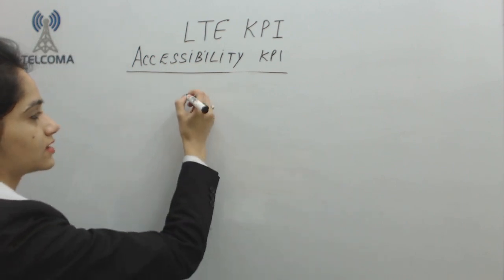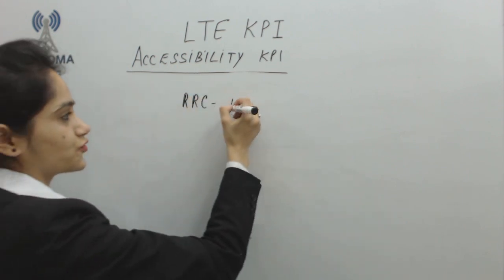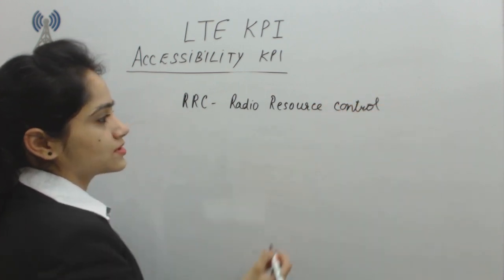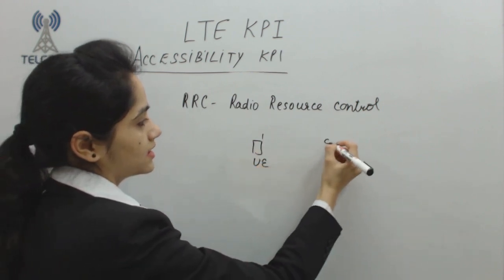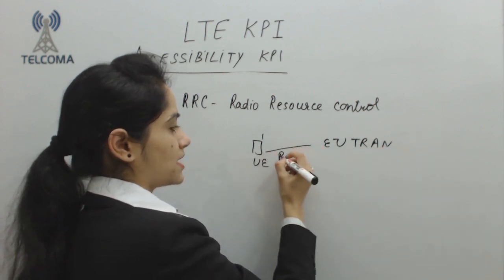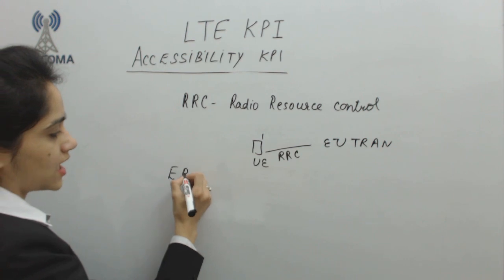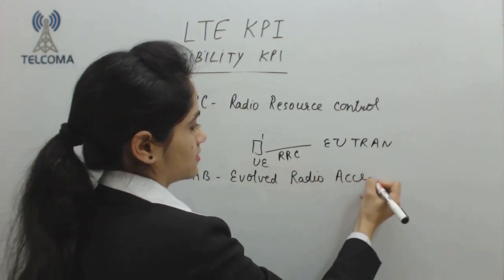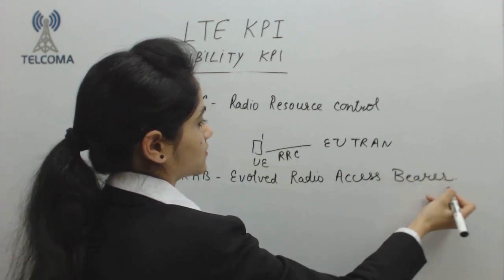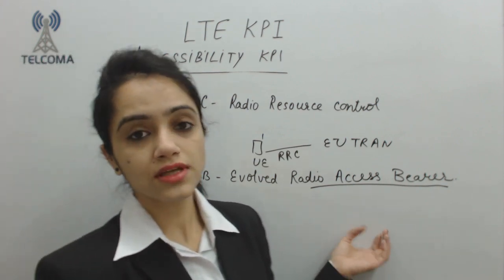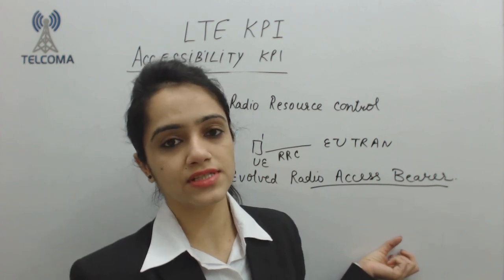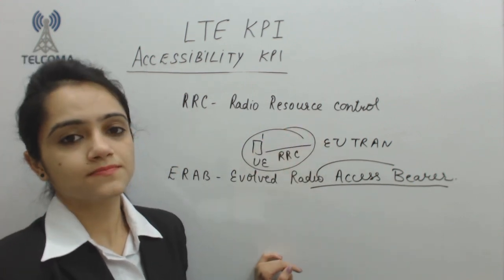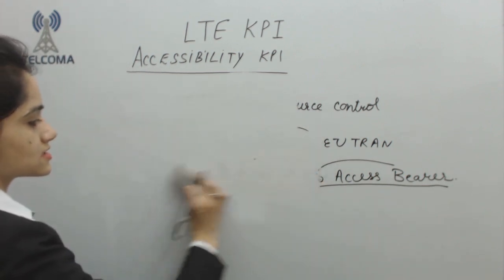The first is RRC, which stands for Radio Resource Control. This radio resource control operates between the user equipment and the E-UTRAN part, meaning the eNodeB. The second is ERAB, which stands for Evolved Radio Access Bearer — bearers are essentially the services. My major concern is that services should be accessed within a given time.